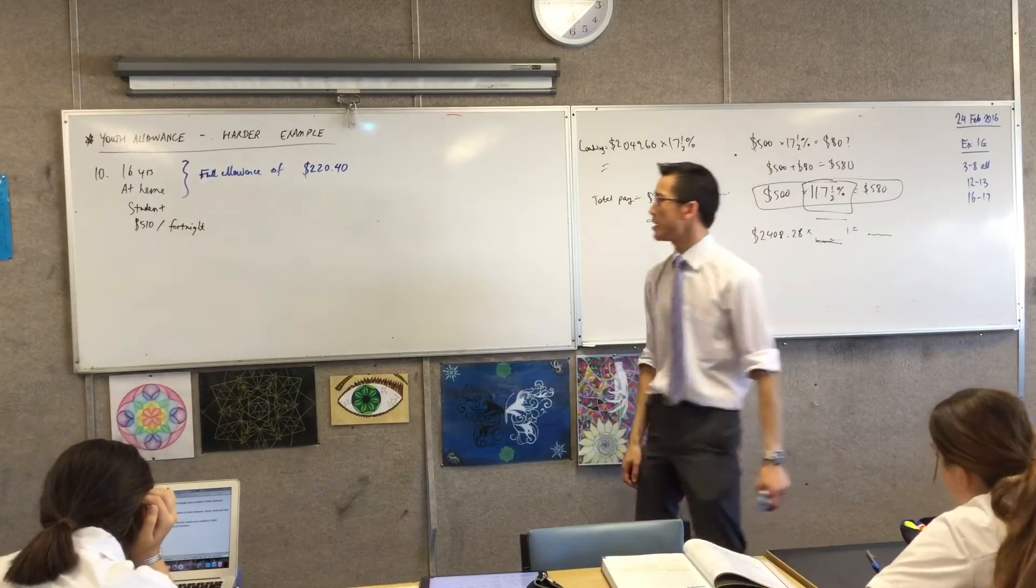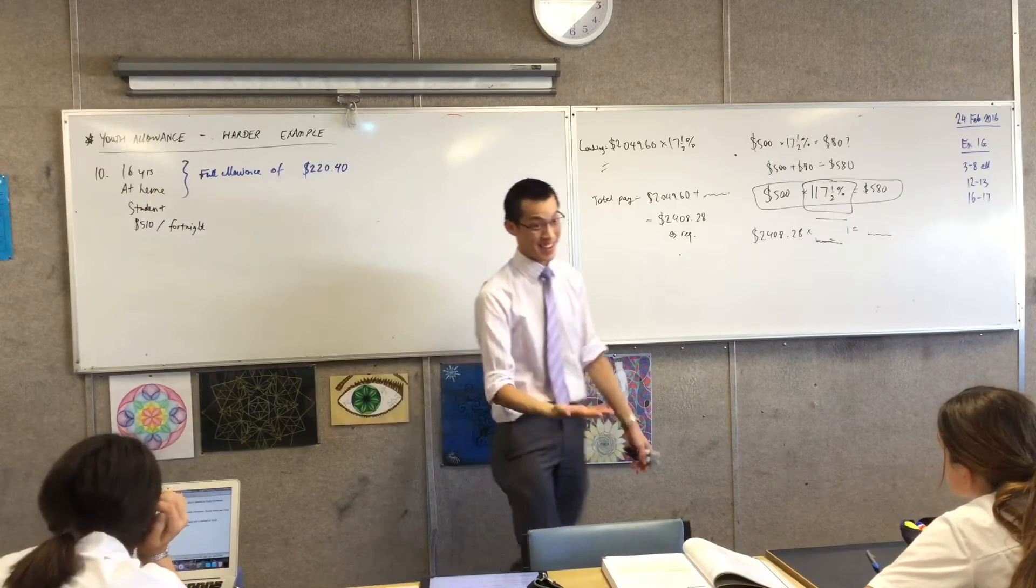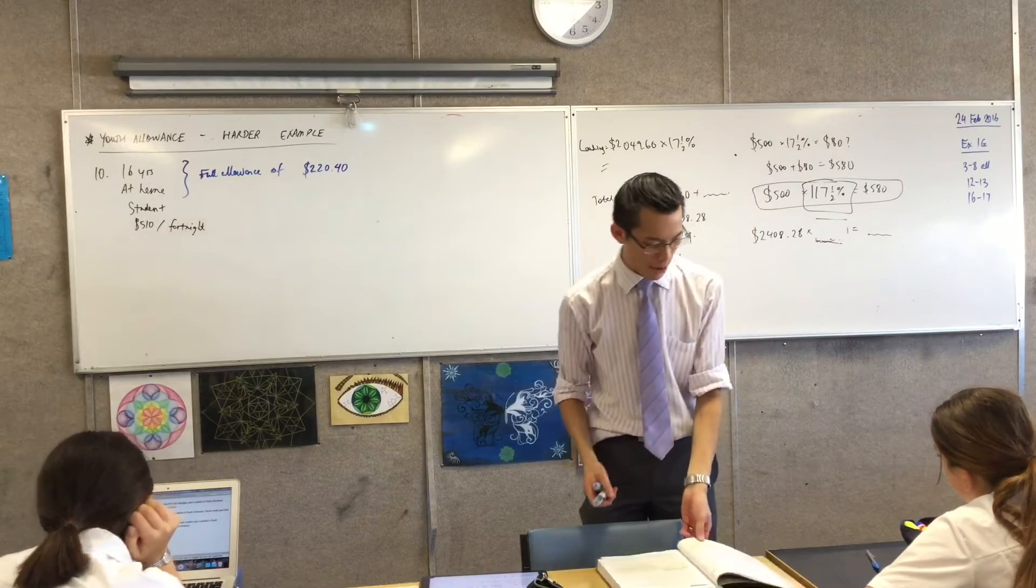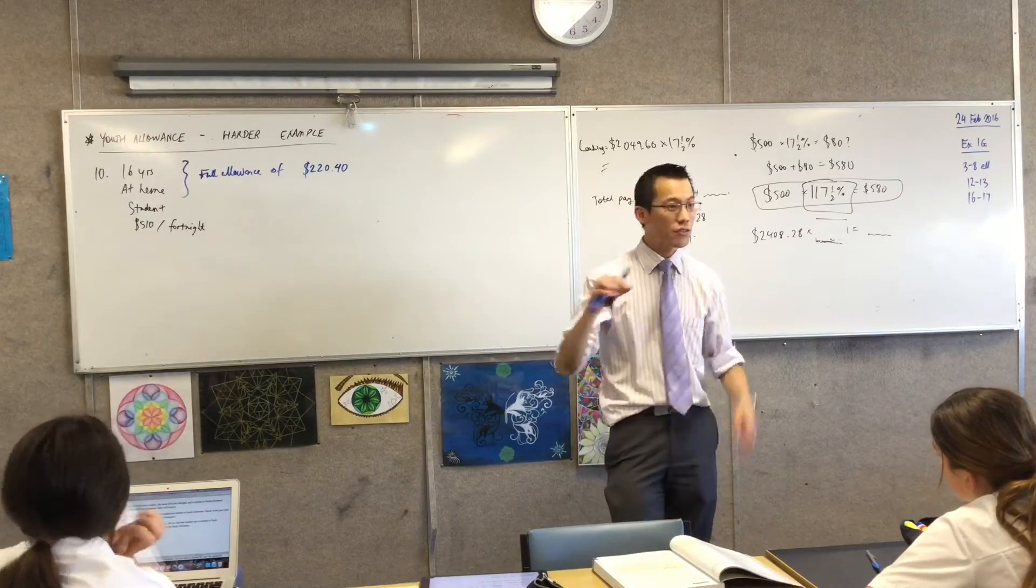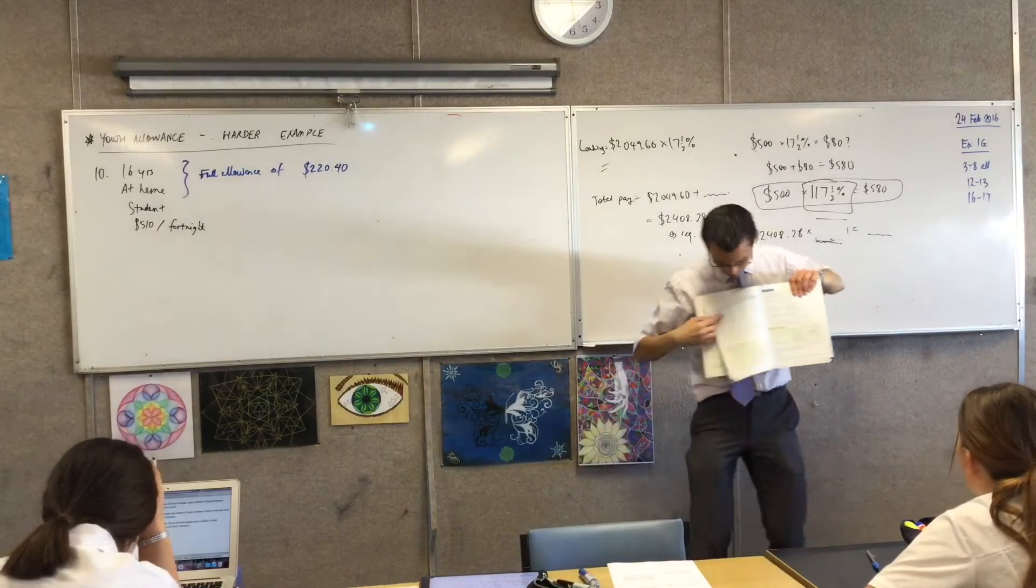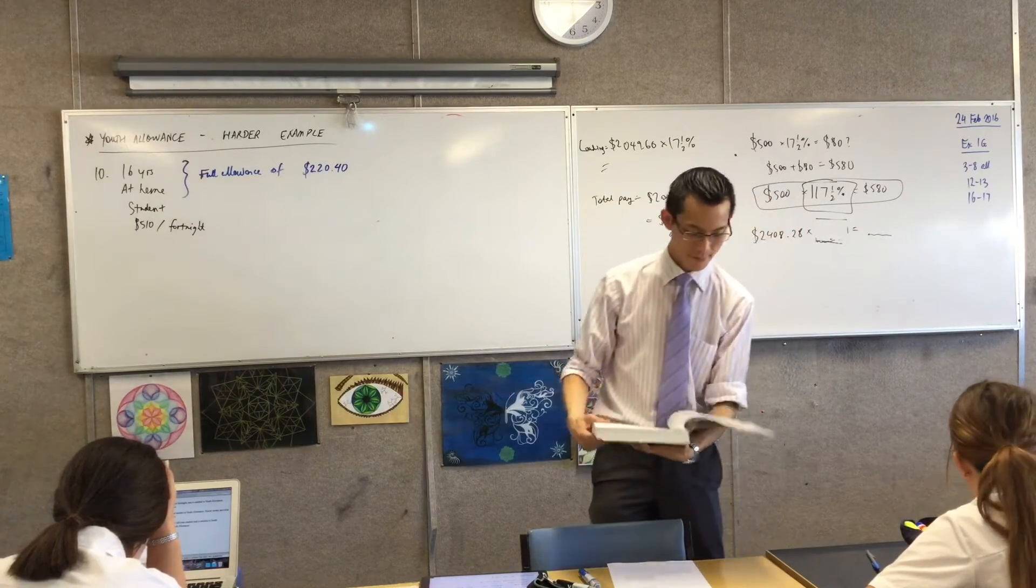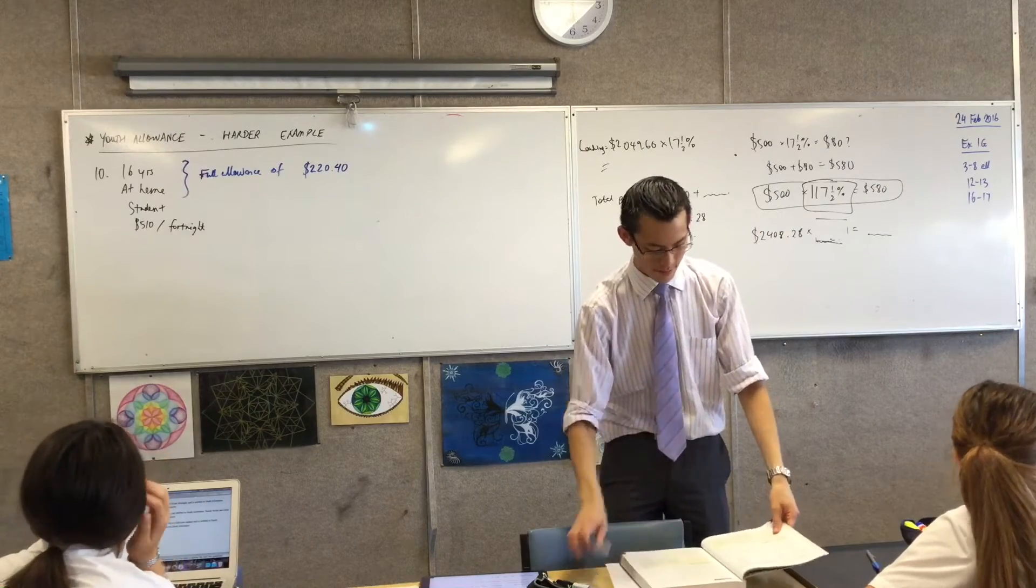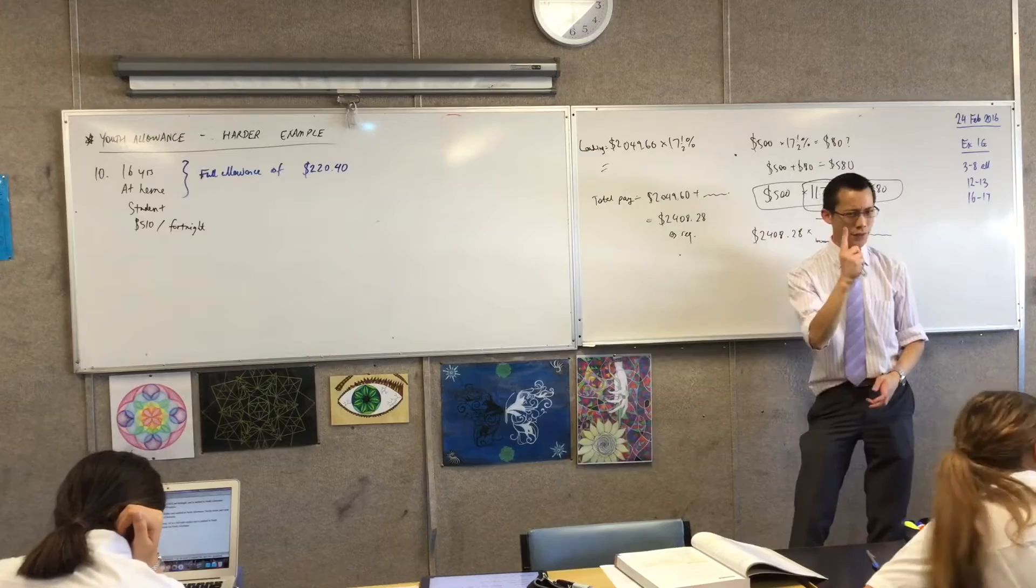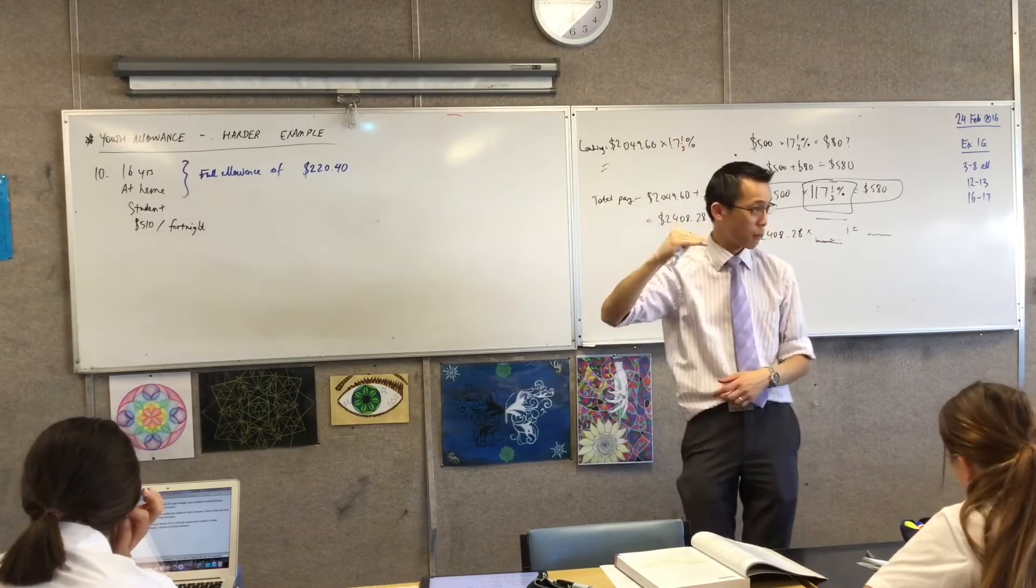And now we're going to find out, will she get this full allowance or not? You're probably guessing she doesn't, but we want to work out how much she actually gets. Now because of who she is, which of the rows of the table - we're looking at this big long one, right? This big one here. Which of the rows of the table applies to her?